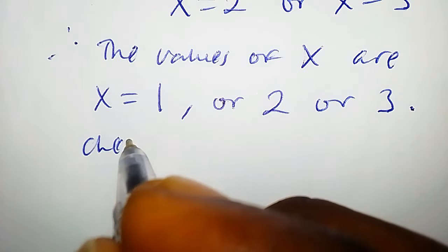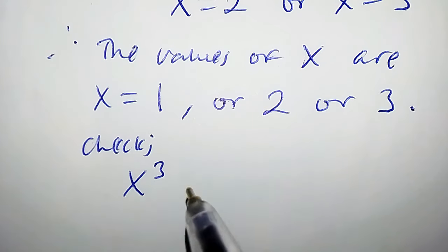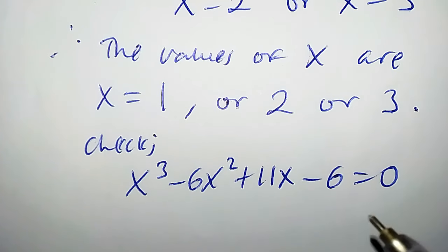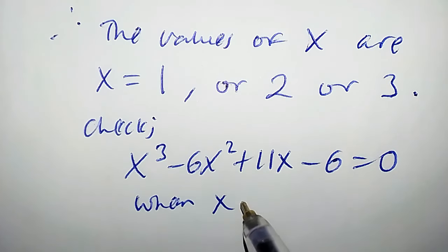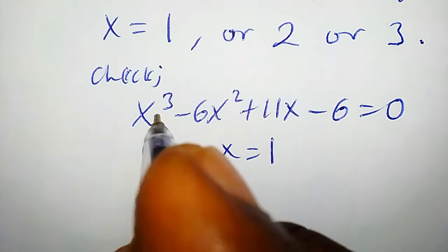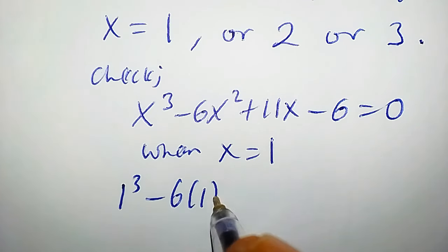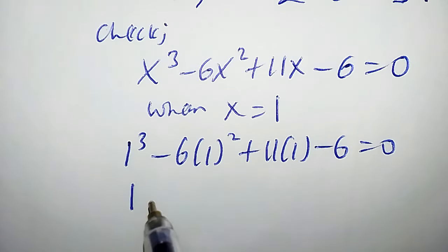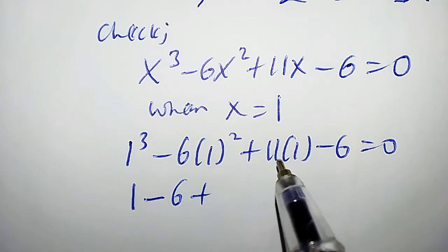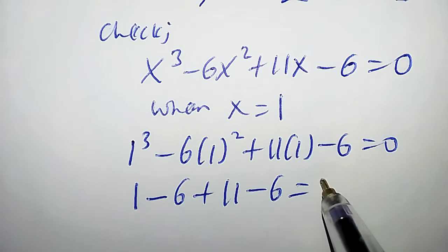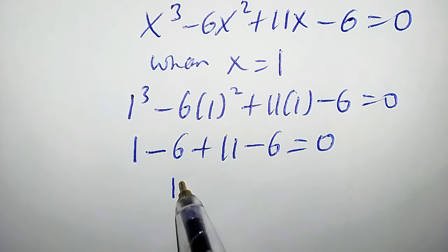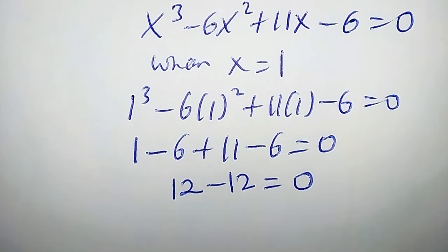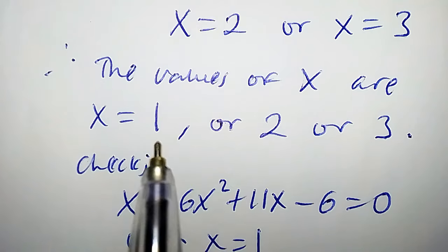Let us check. The original equation is x³ - 6x² + 11x - 6 = 0. When x = 1: 1³ - 6(1²) + 11(1) - 6 = 1 - 6 + 11 - 6 = 0. Since 1 + 11 = 12 and 6 + 6 = 12, we get 12 - 12 = 0. This confirms that x = 1 is a valid solution.